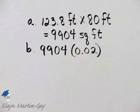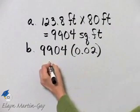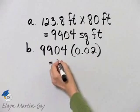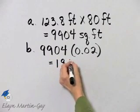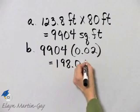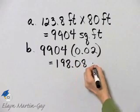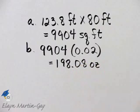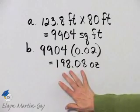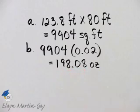And that's how we find how many ounces she needs of the insecticide. Again, I'll let you multiply. Once you multiply these 2 numbers, you have 198.08 and that is ounces. So this is how much insecticide she needs to order. Here we go. Thank you.